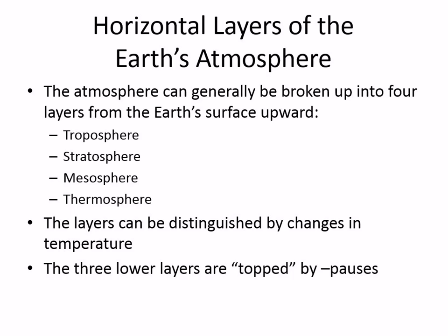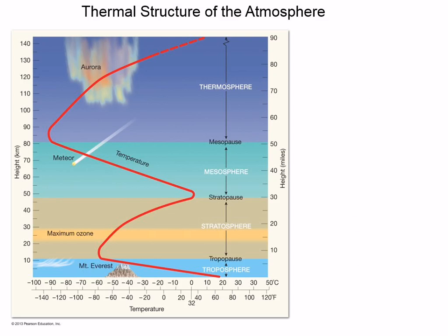Looking at this figure — down here is the Earth's surface, and you can see the four layers: the troposphere, the stratosphere, the mesosphere, and the thermosphere. The red line in this figure is all about temperature. Along the bottom you can read temperature in either Celsius or Fahrenheit.